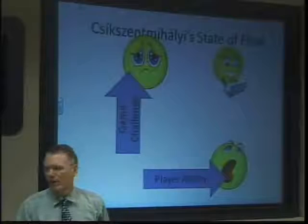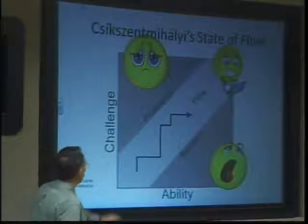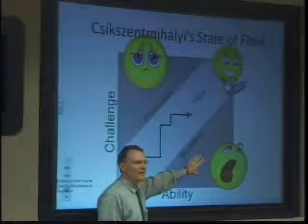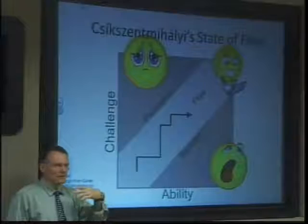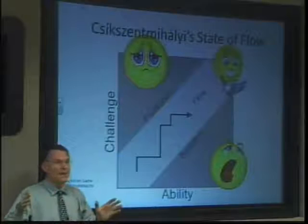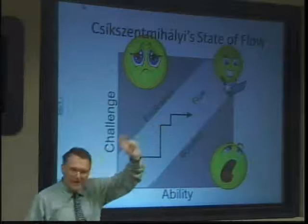Here is the diagram from your textbook. Up here is the zone of frustration — the game got too hard too fast. Down here is the zone of boredom — the challenge didn't rise quickly enough. Some of the games you've made, like Evil Clutches, the challenge really doesn't rise. In Galactic Mail, if you made several different rooms that were a little more difficult with each room, then you understand how to keep your player in the state of flow. A lot of the games you make this semester should keep the player in the state of flow, now that you know what it is.